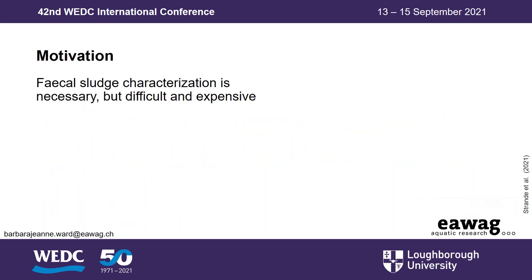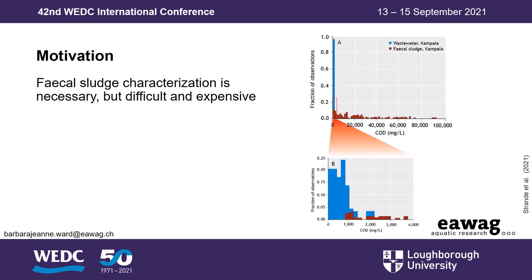First, I would like to explain our motivation behind this project. As those of you who have previously worked with fecal sludge probably know, fecal sludge characteristics can be highly variable. You can see that in this histogram of influent COD measurements from Lubiji treatment plant in Kampala. Influent fecal sludge characteristics can be up to two orders of magnitude more variable than influent wastewater, and they also follow a completely different distribution. This high variability presents a unique challenge in operating and monitoring treatment technologies.